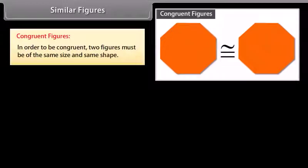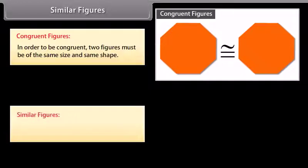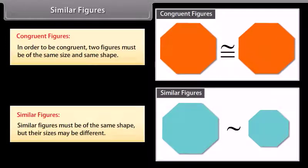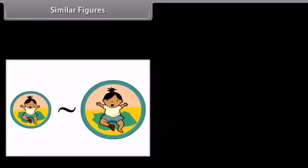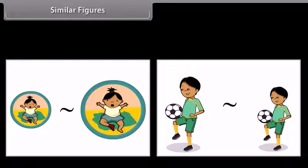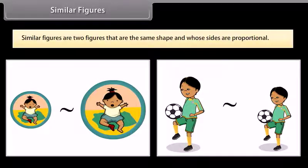Similar figures. Congruent figures: in order to be congruent, two figures must be of the same size and same shape. Similar figures must be of the same shape but their sizes may be different. This is the symbol that means similar. When you have a photograph enlarged, you make a similar photograph. A photograph can also be shrunk to produce a slide. So, similar figures are two figures that are the same shape and whose sides are proportional.